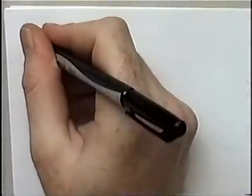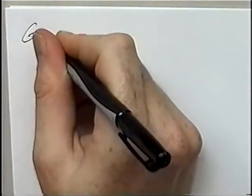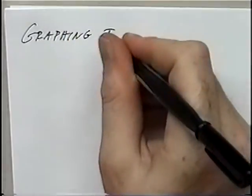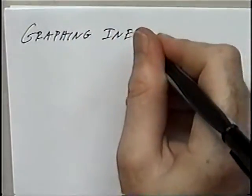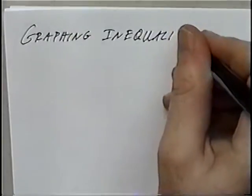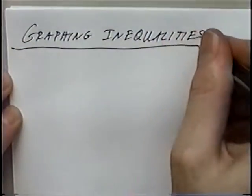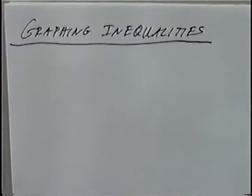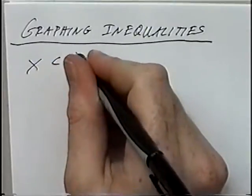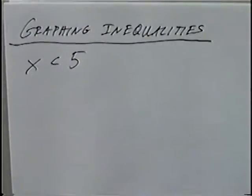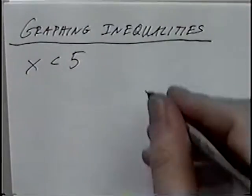The title of the first section is Graphing Inequalities. The first problem is x is less than 5. When we're graphing inequalities with a single variable, the graph will just be on a single number line.